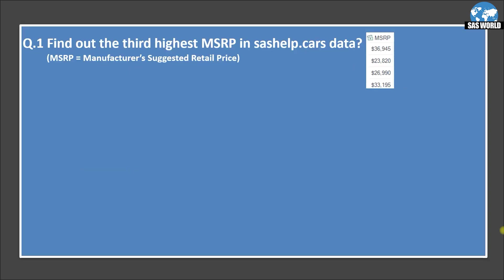So this is the first question: find out the third highest MSRP in sashelp.cars data. MSRP means manufacturer's suggested retail price. So we want to find out the third highest price. You may also get a similar question like find out the third or fourth highest salary. This variable is the source MSRP, and these are the values. Let's see the answer.